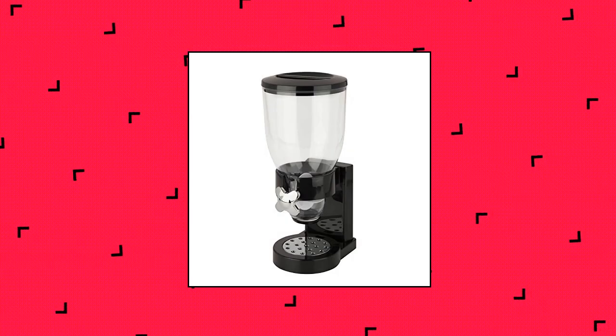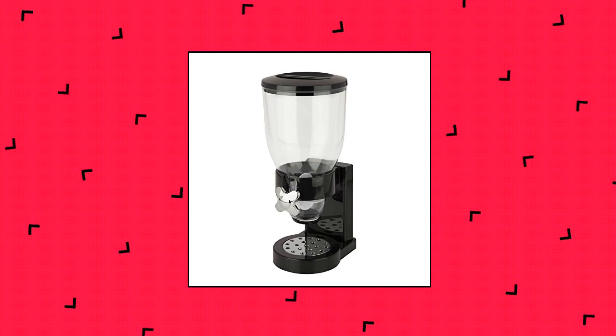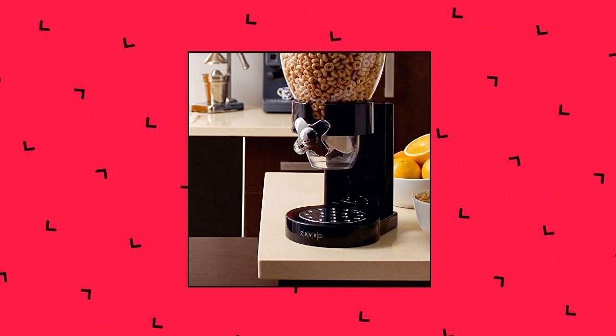Zevro Honey Can Do dry food dispenser. Single food dispenser holds up to 17.5 ounces. Dispense 1 ounce per twist. Preserves freshness for up to 45 days to minimize waste. Perfect for cereal, trail mix, candy, granola, nuts, beans, rice and more.